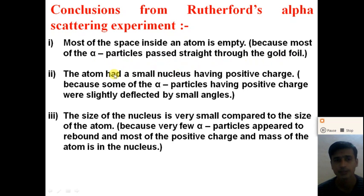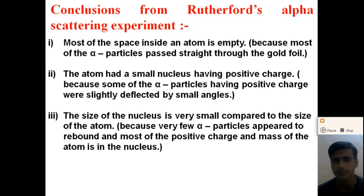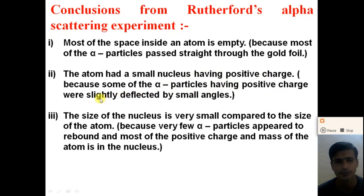The second observation is that the atom had a small nucleus having a positive charge, because some of the alpha particles having a positive charge were slightly deflected by a small angle. From that, Rutherford calculated that inside the atom there is a very small region which has a positive charge. Rutherford states that this region is called the nucleus.